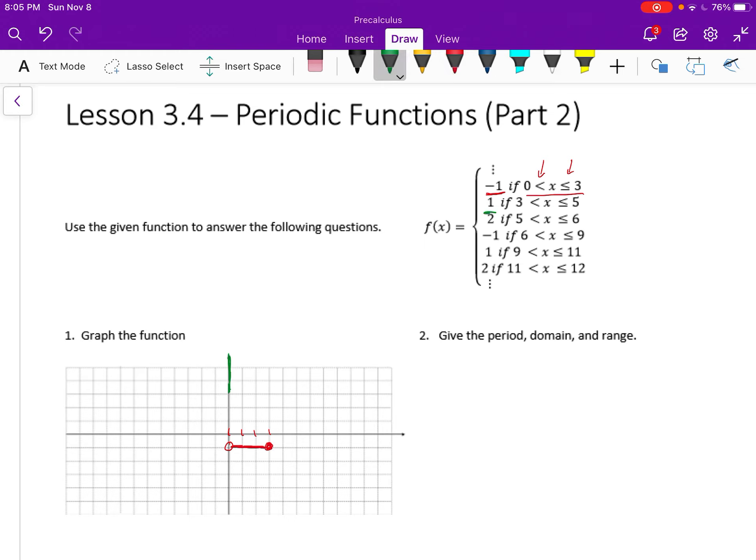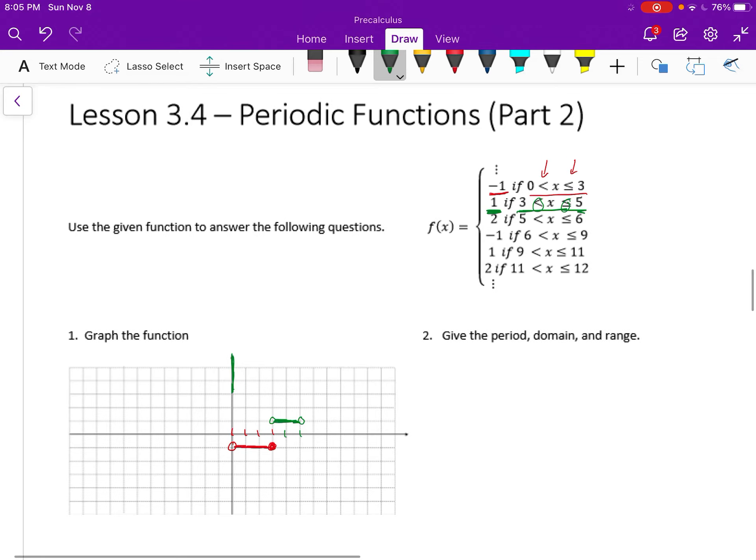Moving on to the next part, one, and we want that from three to five. So we're at three, we want this to be at one, from three to five. That's at one. And again, open circle on the left, closed on the right.